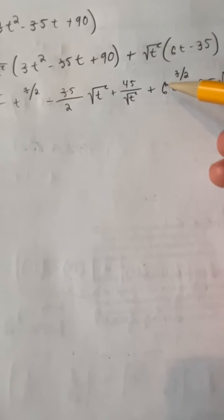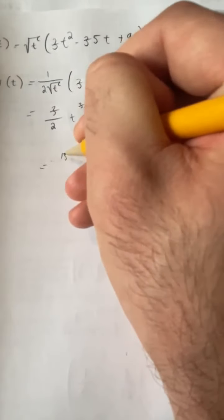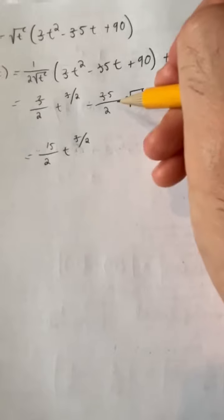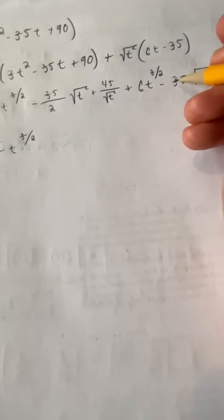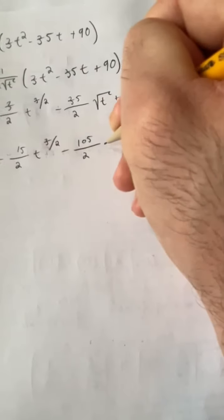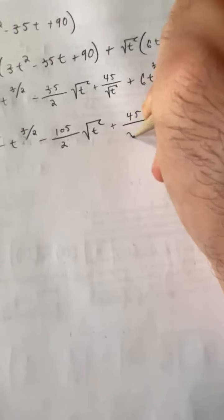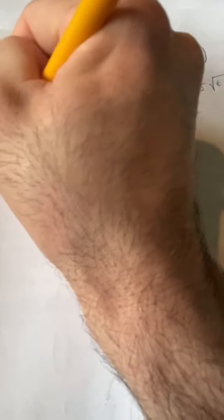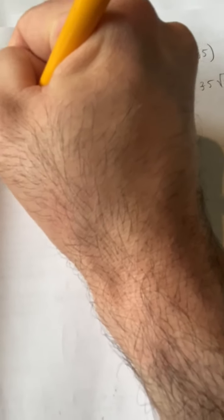Combining them: 6 is 12-halves, plus 3-halves gives 15-halves t to the three-halves. Then minus 35-halves radical t minus 35 radical t — that's 35-halves plus 70-halves equals 105-halves — so negative 105-halves radical t. And then the last term is plus 45 over radical t. So this is our final simplified form for v of t, part a.